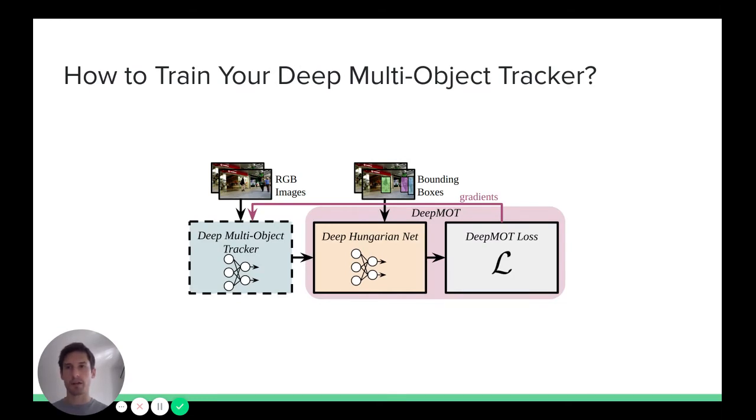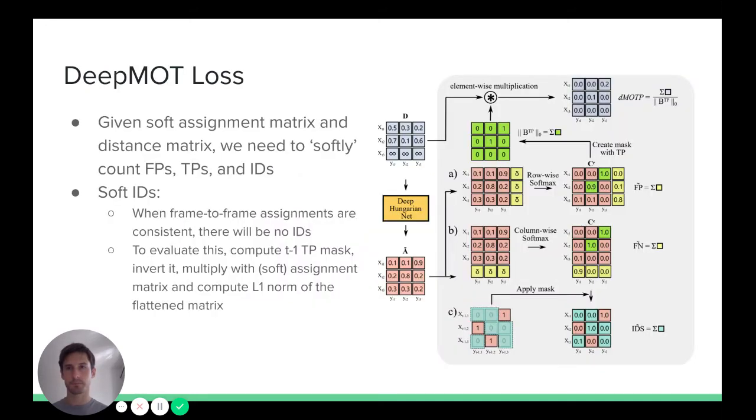Now, we need to express the loss function as a function of the distance matrix and computed soft assignment matrix. Let's start with some intuition. We first compute a distance matrix, we feed it to the Hungarian net, and we obtain a soft assignment matrix.